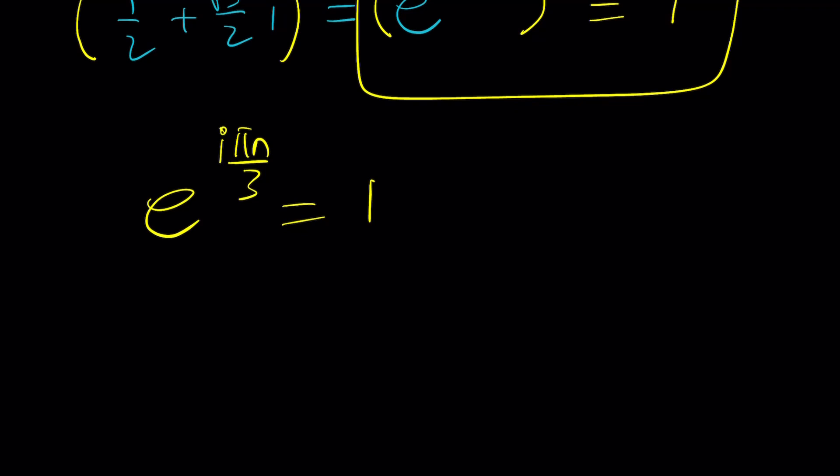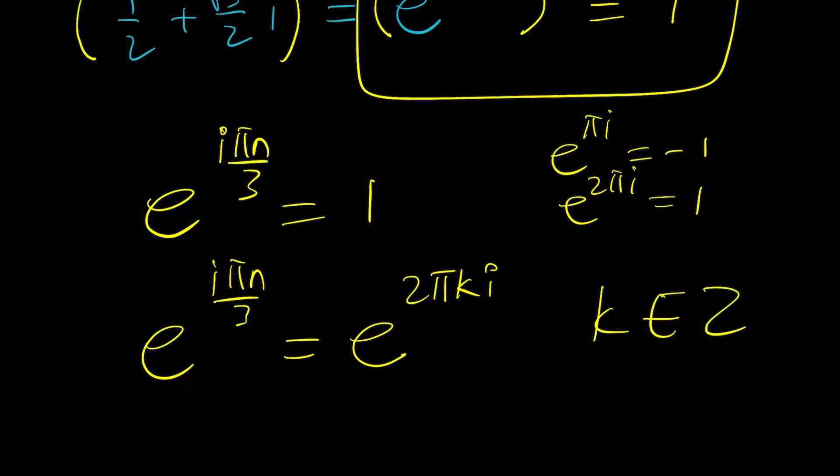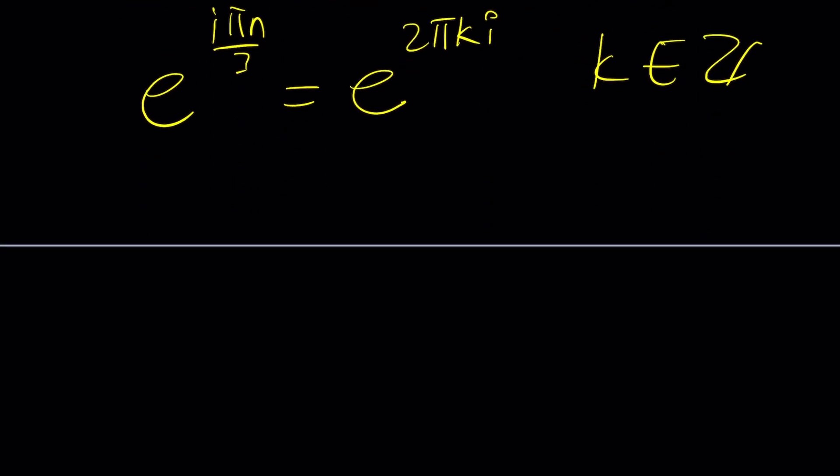Here's what I can do. I can write 1 as a complex number in polar form, and that will be something like e to the power 2πki. Remember, I told you e to the power πi is negative 1, e to the power 2πi is 1, and you can basically raise it to any power k, as long as k is an integer. Zahlen, right? Okay, great.